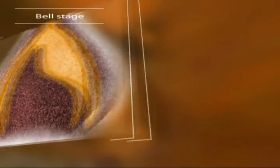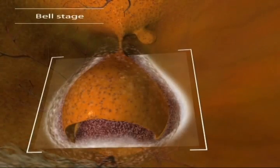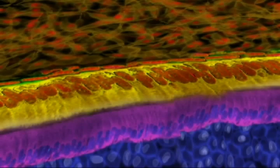By the time the tooth bud pinches off from the dental lamina at the end of the bell stage, the inner enamel epithelium has folded to form the shape of the future crown. With a scaffold to work on, the masons of the tooth world go to work.